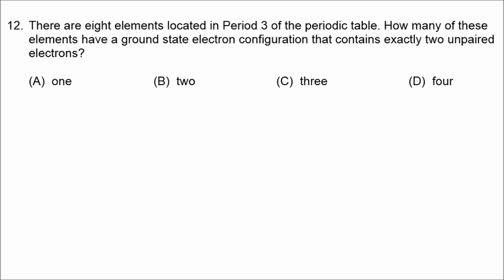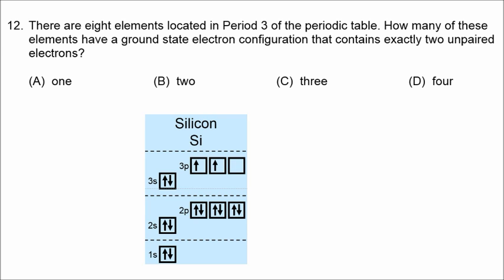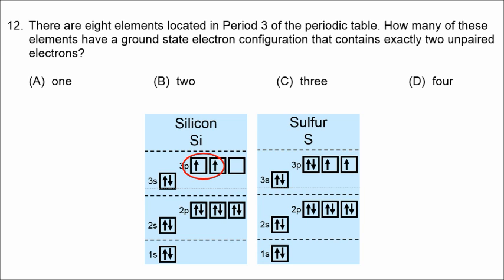Number 12 considers the 8 elements in period 3, from sodium to argon. Sodium has 1 unpaired electron, magnesium has 0, aluminum has 1, silicon has 2, phosphorus has 3, sulfur has 2, chlorine has 1, and argon has 0 unpaired electrons. The correct answer is two elements — silicon and sulfur — which both have 2 unpaired electrons.